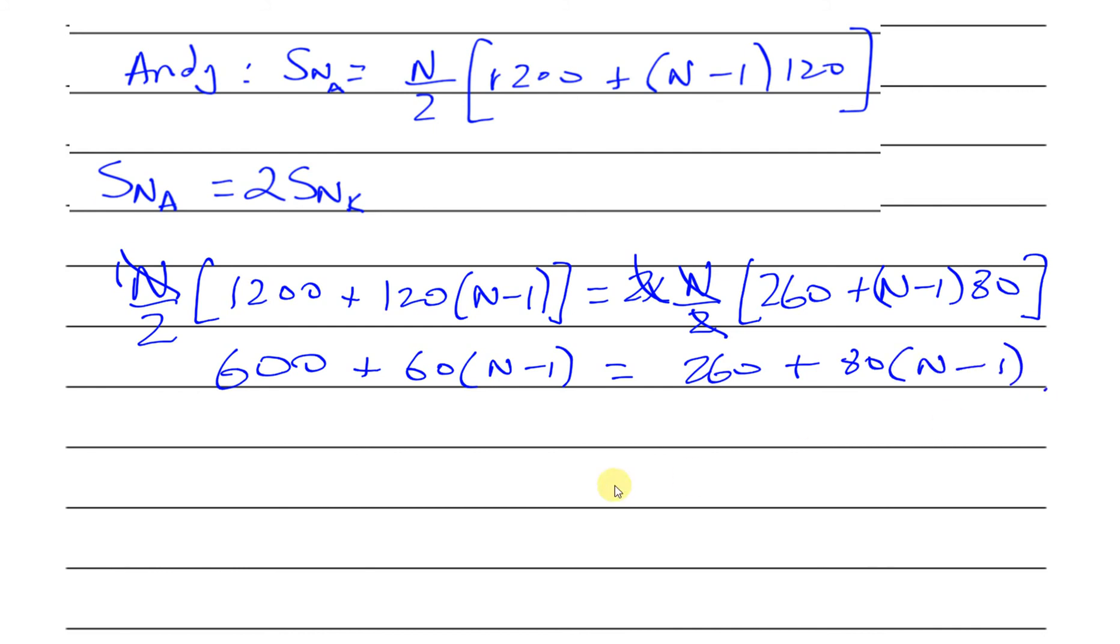600 - 260 = 340 equals 80(N-1) - 60(N-1), which is 20(N-1). Divide both sides by 20, that gives you 17 = N-1, so N = 18.